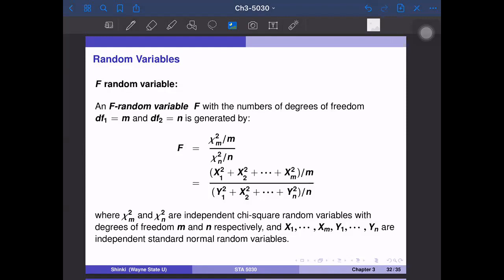F distribution has two parameters: numerator degrees of freedom or degrees of freedom one, and denominator degrees of freedom or degrees of freedom two. F distribution is defined as chi-square random variable with df_m divided by m, divided by chi-square distribution with df_n divided by n.